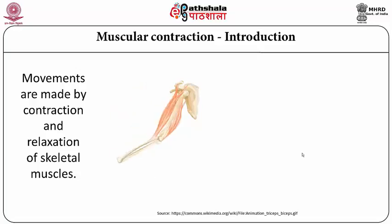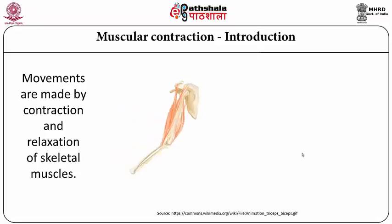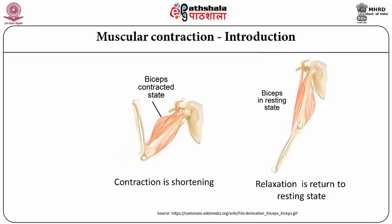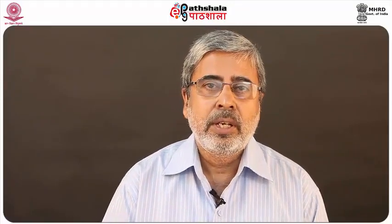After the flexion there is extension of the elbow. During flexion, the biceps muscle is bulging out, and during extension the triceps muscle is bulging out. So essentially the movements are made by contraction and relaxation of the muscles. In the stopped picture you can see that in the shortened condition the biceps is bulged or contracted, and the triceps is bulged during the relaxed state. This makes it very clear that muscles help motion by contracting and relaxing.